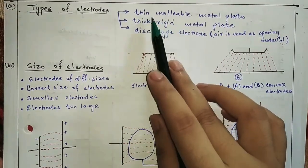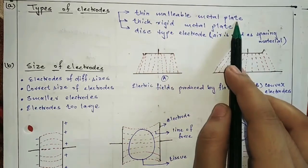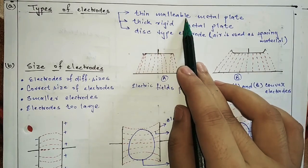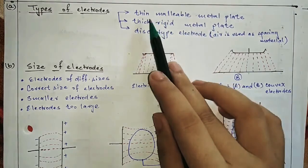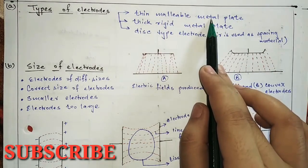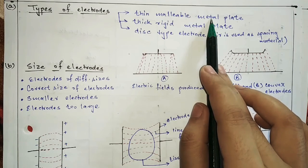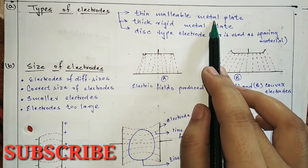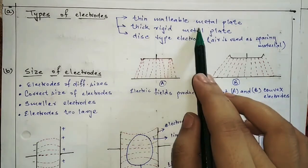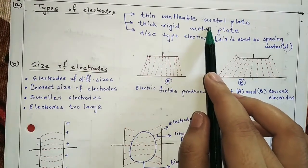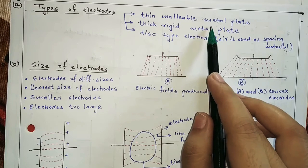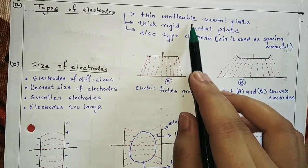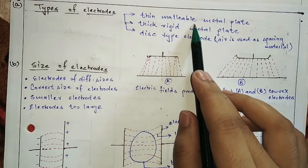The first type is the thin malleable metal plate. This is flexible, covered with rubber pads as insulating material. It is very easily molded to body parts and can be used effectively in treatment.